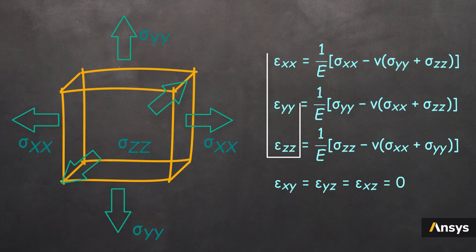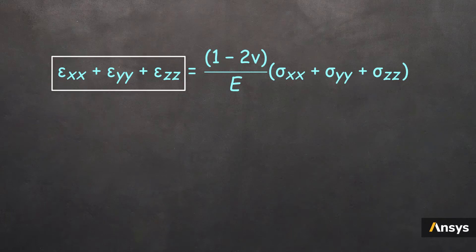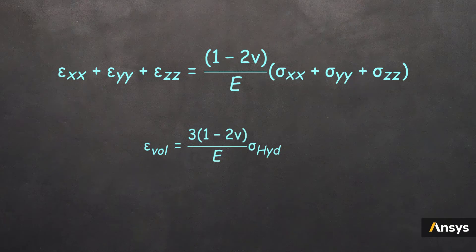If we add these three strains, then we reduce the relation to this equation. Now, notice that the sum of these terms is nothing but the volumetric strain. One can reduce that using simple math. Also, we can replace the sum of the three stress terms by three times the hydrostatic stress, which is nothing but the average of these components.